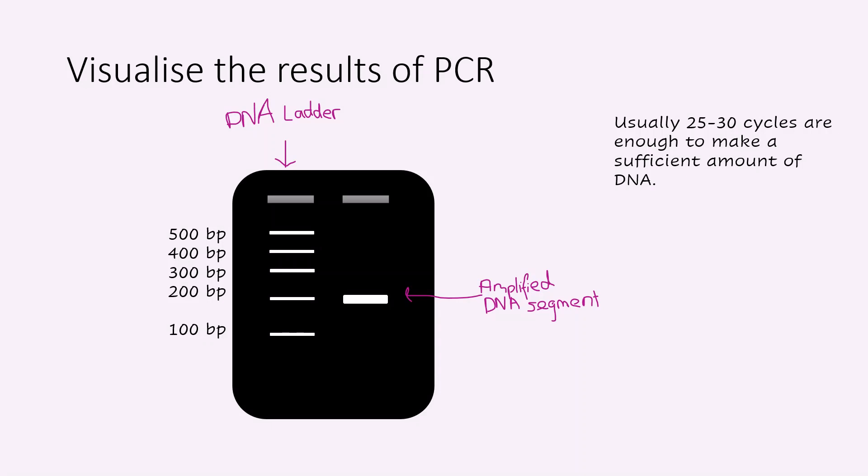The PCR product can be visualized using gel electrophoresis, which is a technique that separates DNA fragments according to size. A standard DNA ladder is included to identify the size of the PCR product. The DNA fragment amplified by the PCR will produce a visible band.